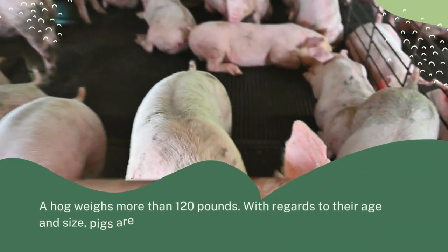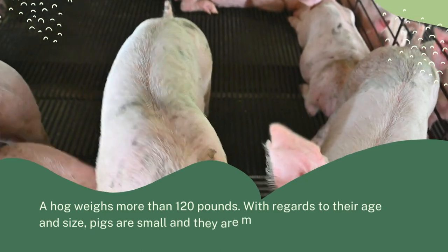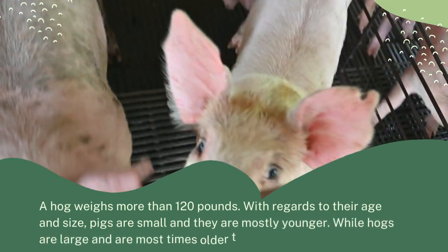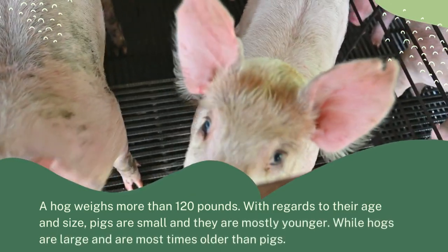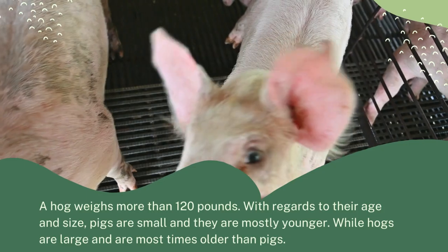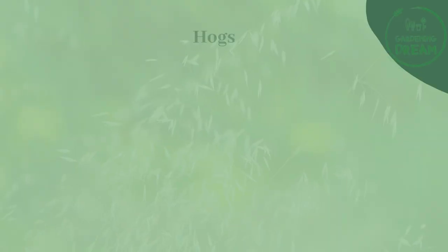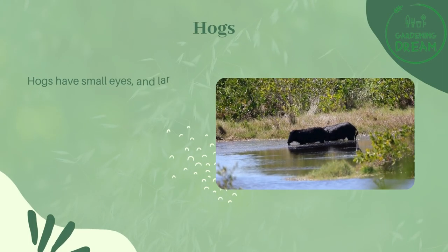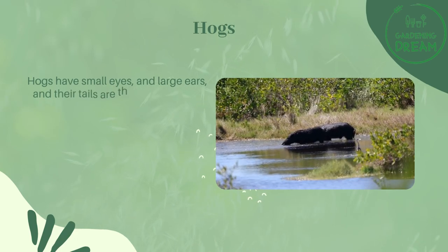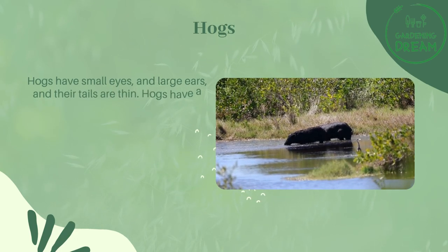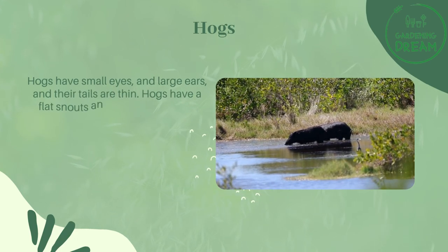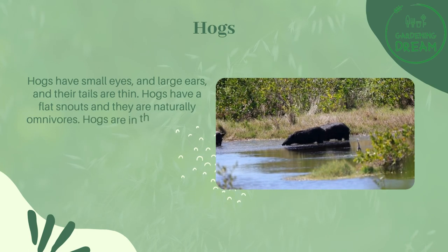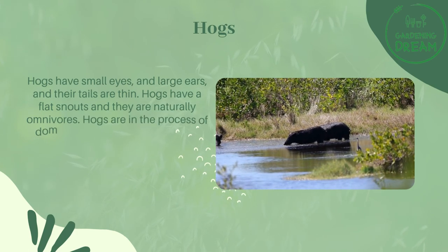With regards to their age and size, pigs are small and mostly younger, while hogs are large and most times older than pigs. Hogs have small eyes, large ears, and thin tails. They have flat snouts and are naturally omnivores.